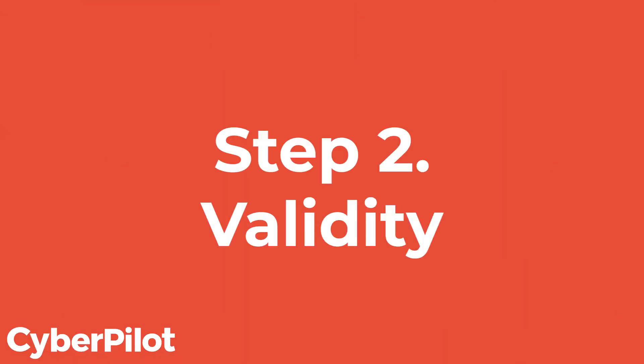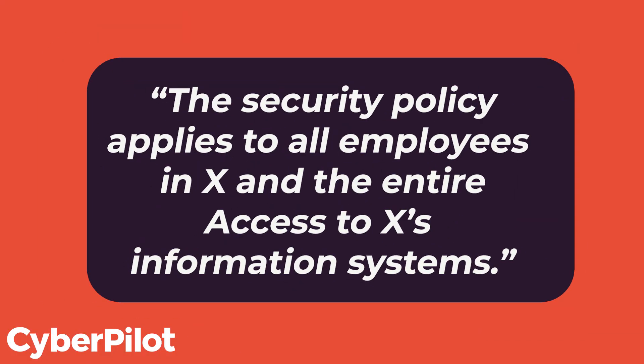Step two: validity. The next step in your information security policy is to determine who the policy affects. Typically, this could be all employees in your organization, but you could also include freelancers or consultants who work for you. For example: 'The security policy applies to all employees in the organization and the entire access to X's information systems.' This is where you decide who it affects — are there any employees that should be exempt, or should you have another policy for freelancers? This is for you to decide.